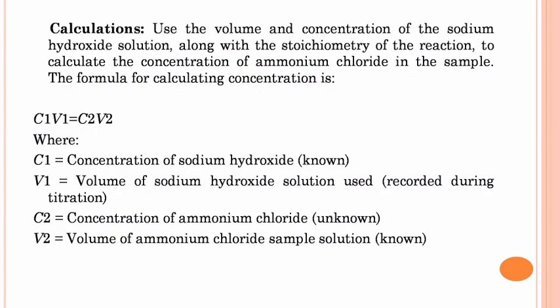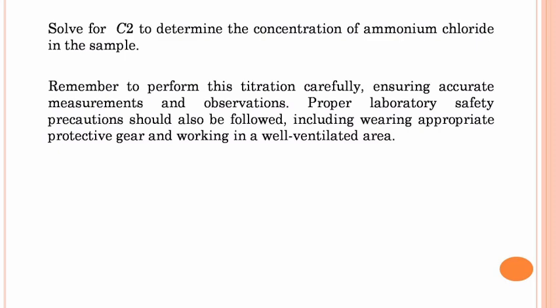Calculations: use the volume and concentration of the sodium hydroxide solution, along with the stoichiometry of the reaction, to calculate the concentration of ammonium chloride in the sample. The formula is C1V1 = C2V2, where C1 is the known concentration of sodium hydroxide, V1 is the volume of sodium hydroxide used recorded during titration, C2 is the unknown concentration of ammonium chloride, and V2 is the known volume of the ammonium chloride sample solution. Solve for C2 to determine the concentration of ammonium chloride.